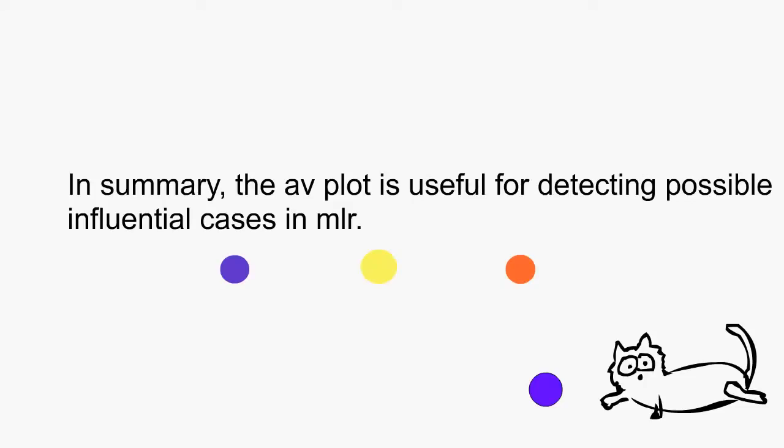In summary guys, the AV plot is useful for detecting possible influential cases in MLR. I will show you how to get this plot in various stats packages in separate videos and add the links in the description box below. Also, look out for the video on partial residual plots as well.